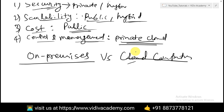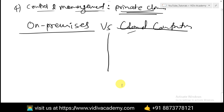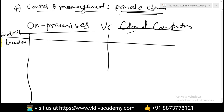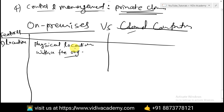Cloud computing, on the other hand, involves delivering IT services over the internet. Instead of owning and managing physical hardware, businesses rent computing resources from third-party providers like Amazon AWS, Microsoft Azure, or Google Cloud Platform. In terms of location: on-premise is a physical location within the organization, while cloud computing uses remote data centers.